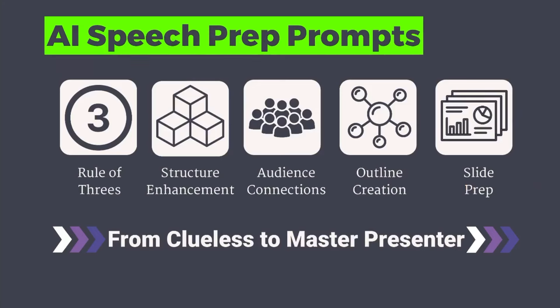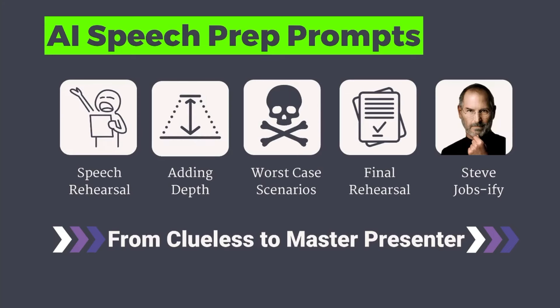Today we're going to go through a few different steps. The rule of threes is a very powerful way to structure your speeches. Then we're going to look at enhancing that structure, different audience connection points, outline creation, slide preparation, speech rehearsal, and all the amazing ways that AI can critique your speech rehearsal. After the rehearsal, we're going to practice for worst case scenarios — so even if the projector breaks and the screen falls down, you can still keep going. We'll look at the final rehearsal and then a bunch of prompts for how to Steve Jobsify everything you're creating.